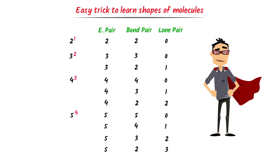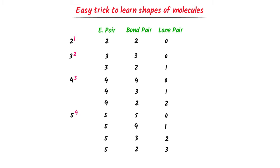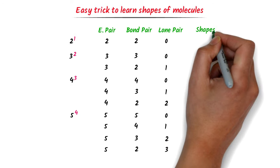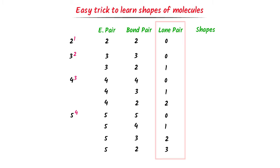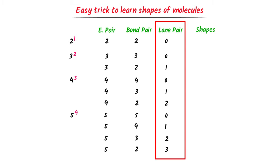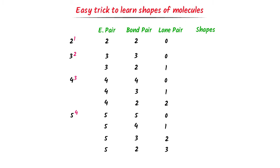This first column is the electron pairs, this second column is the bond pair of electrons, and this third column is the lone pair of electrons. I have successfully written the 90% code of this trick. Now it is time to write their respective shapes. I select all the molecules having zero lone pair — this one, this one, this one, and this one.